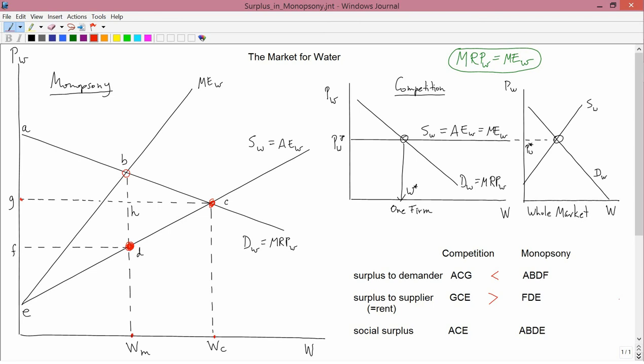In social surplus, ACE is obviously larger than ABDE. Why has social surplus shrunk?